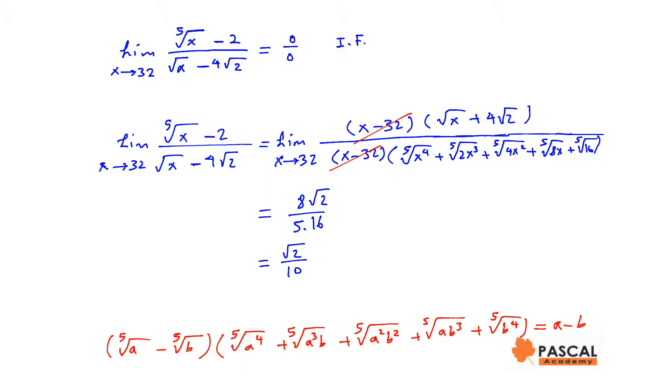We multiply both the numerator and the denominator by the conjugate of the denominator. The conjugate of the denominator is square root of x plus 4 square root of 2. And if we multiply by its conjugate, we have x minus 32.